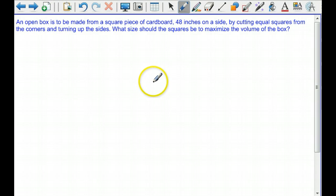So this is a more practical example. An open box is to be made from a square piece of cardboard, 48 inches on a side by cutting equal squares from the corners and turning up the sides.